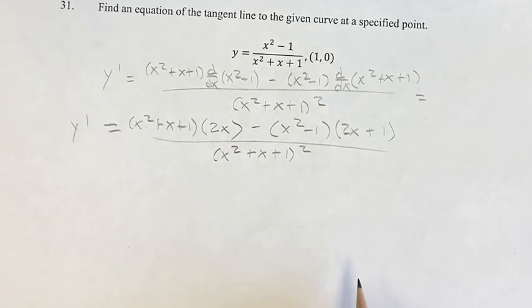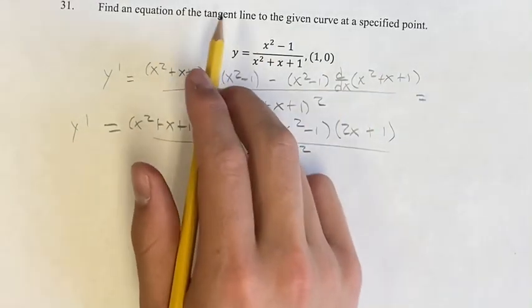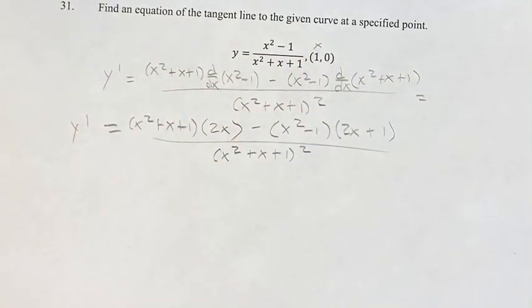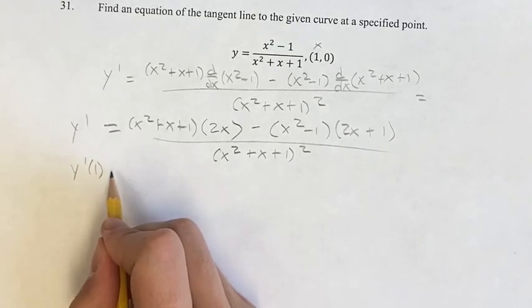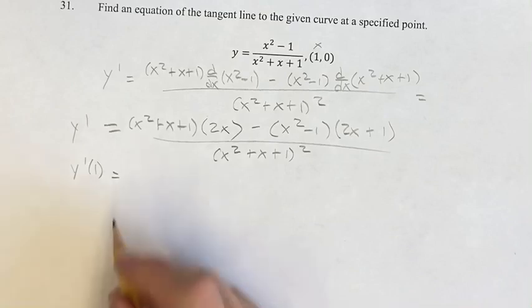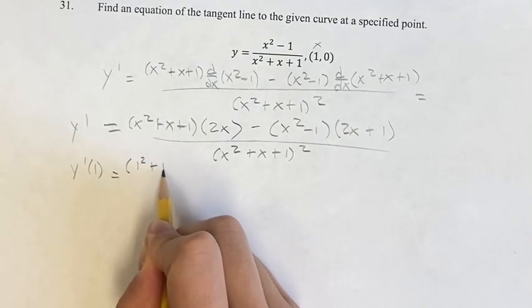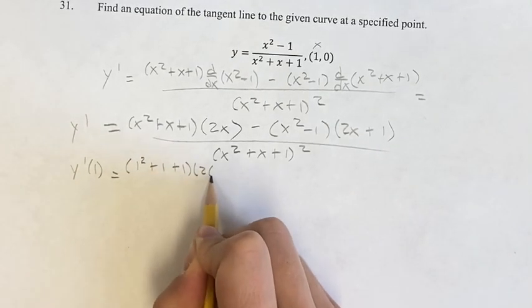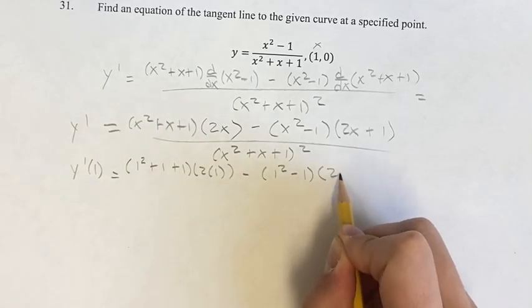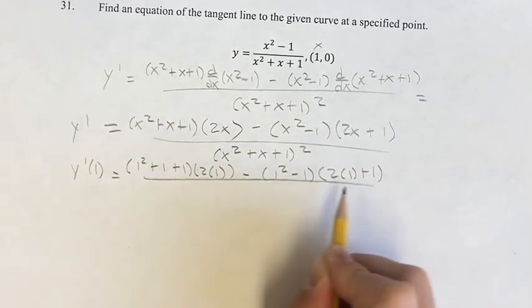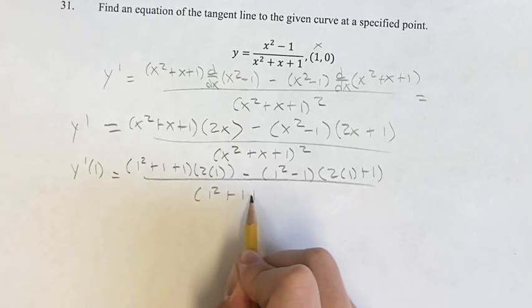But we're looking to find the slope of the tangent line when x is equal to 1. So therefore, we just have to find the value of the derivative when x is equal to 1, which just involves us plugging this in. So we get 1 squared plus 1 plus 1 times 2 times 1 minus 1 squared minus 1 times 2 times 1 plus 1 over 1 squared plus 1 plus 1 squared.